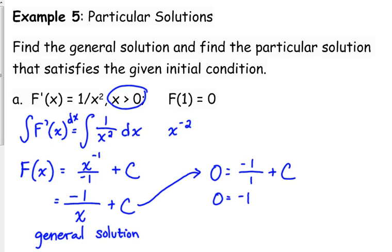So negative 1 divided by 1 is negative 1. Move the 1 over. So 1 is our constant of integration, remember that's what we called C, it was the constant of integration. So our particular solution here is F(x) equals negative 1 over x plus 1. C would have been different if we had been given a different initial condition.